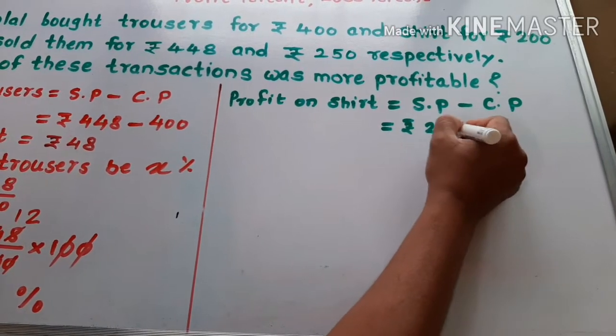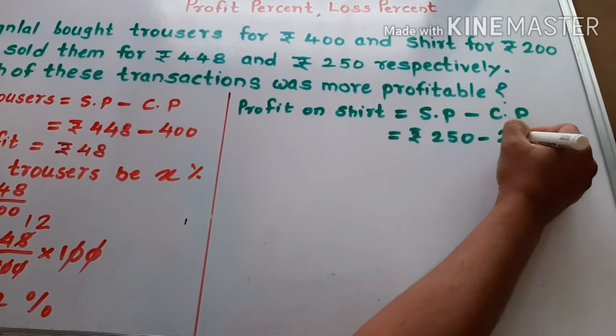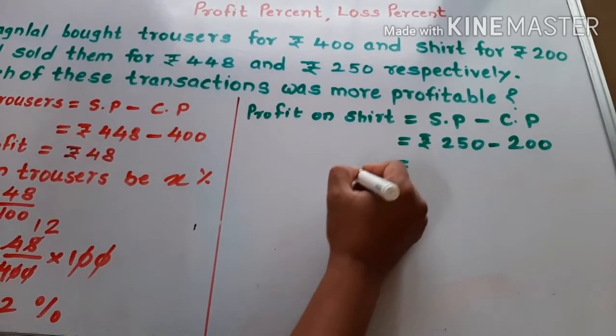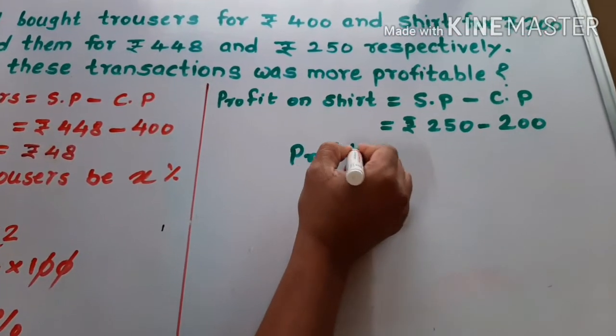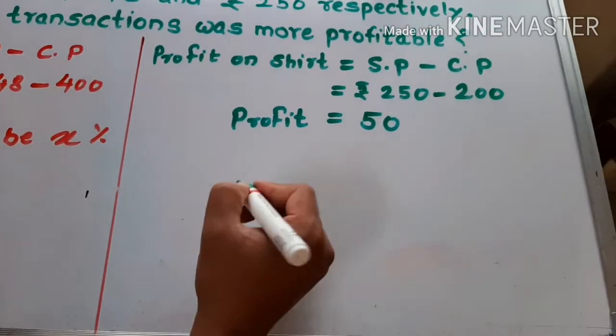The selling price of shirt is Rs. 250 and cost price of shirt is Rs. 200. We get profit on shirt is equal to Rs. 50.